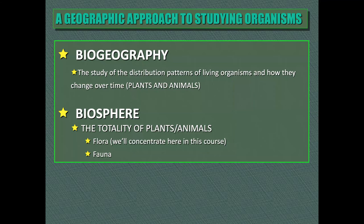Defining biogeography is rather simple. It deals with both plants and animals, although in this class we're going to focus entirely on plants. It's the study of the distribution patterns of them — so when you hear the word desert, forest, tropical forest, savanna, or grassland, that's what I'm talking about. Biogeography is the totality of plants and animals in an area; again, we'll concentrate on the plant portion in this course.